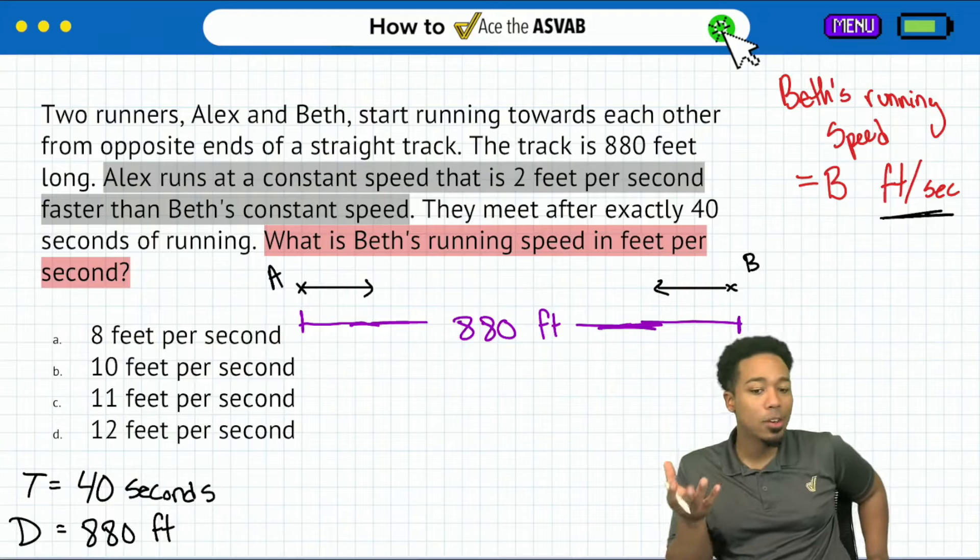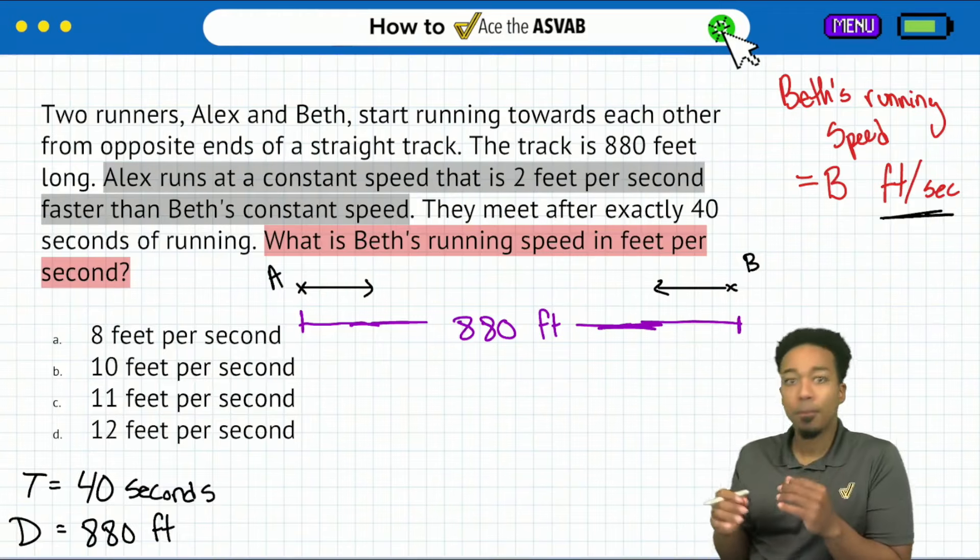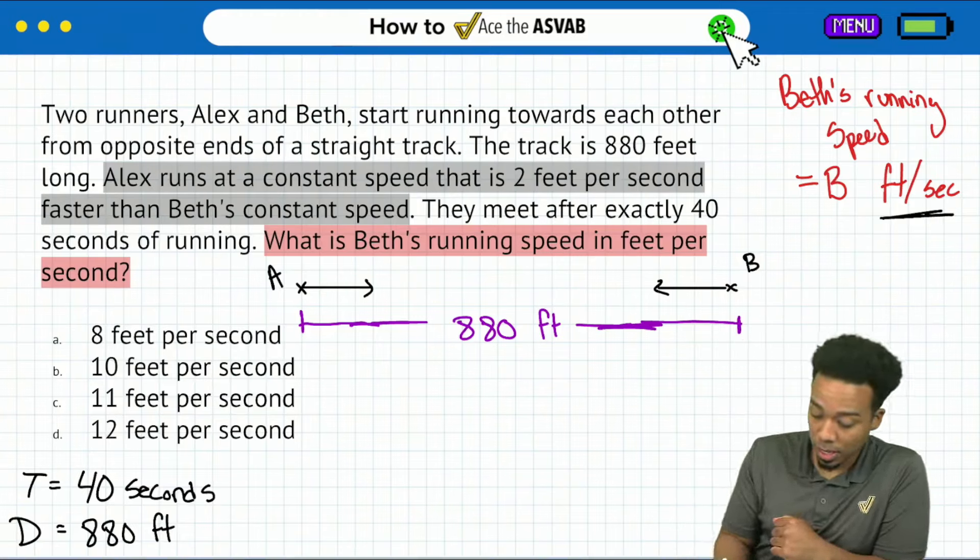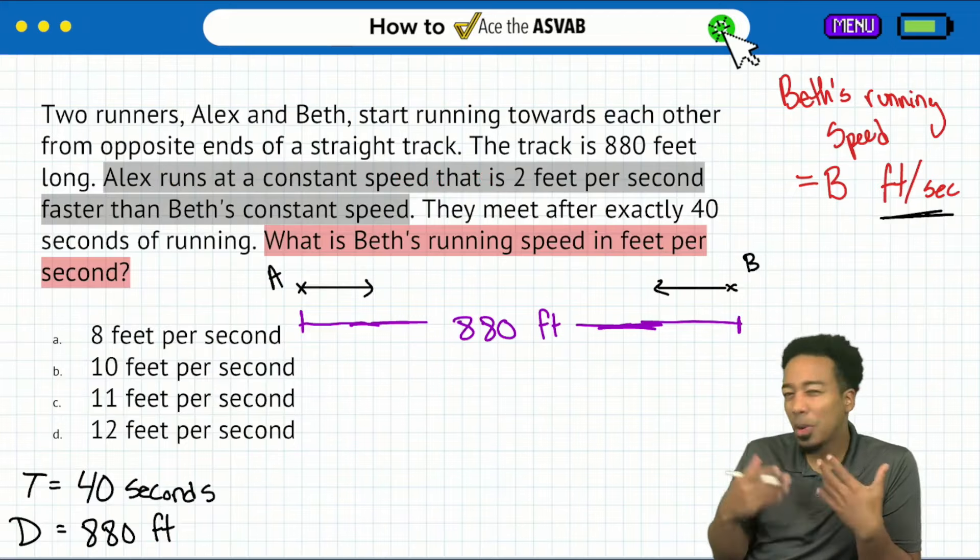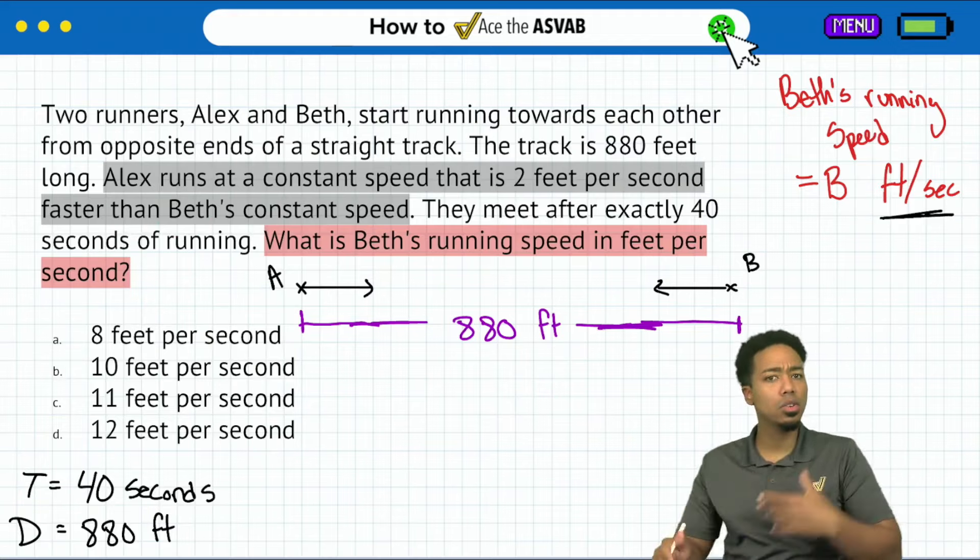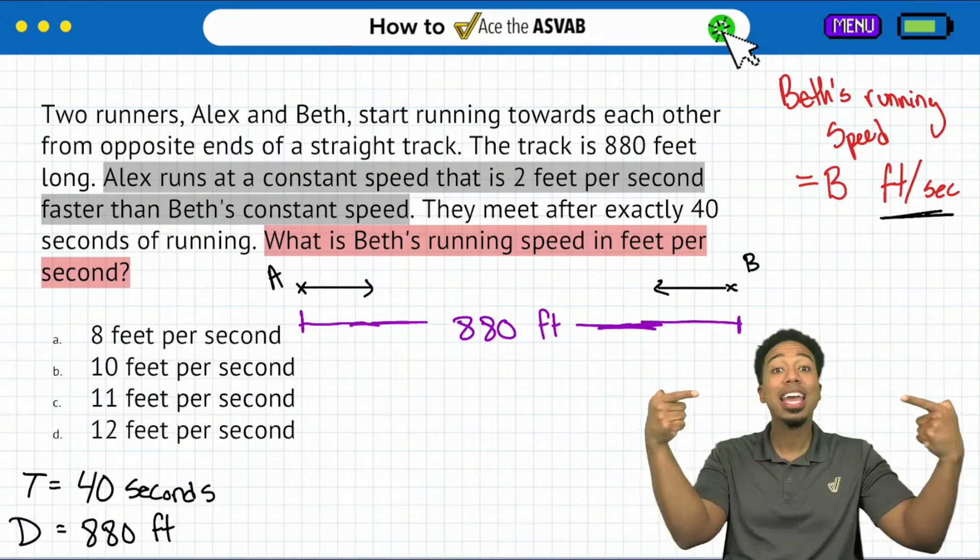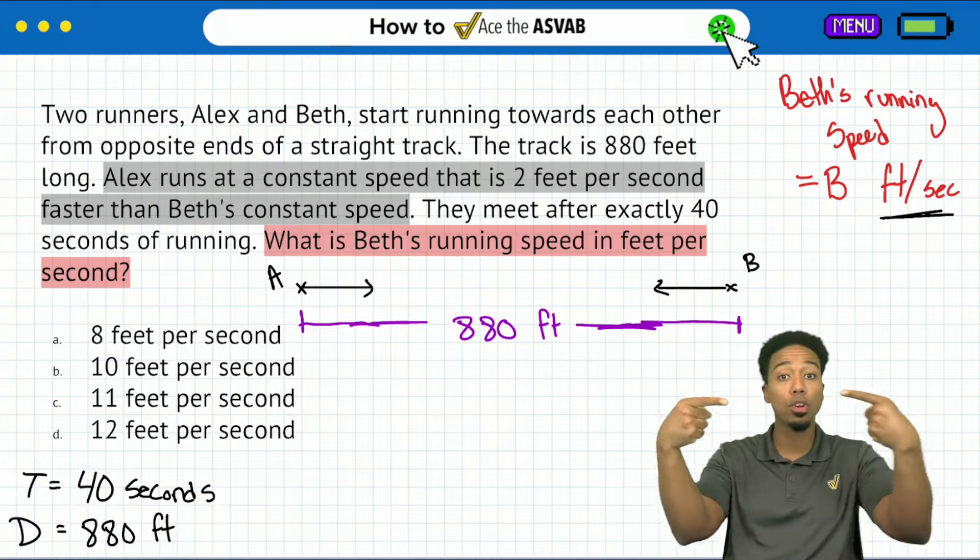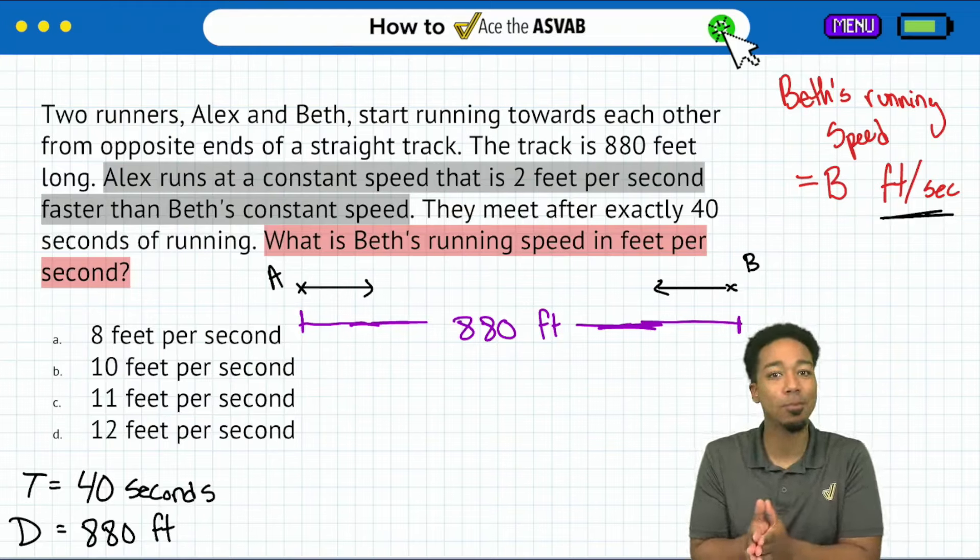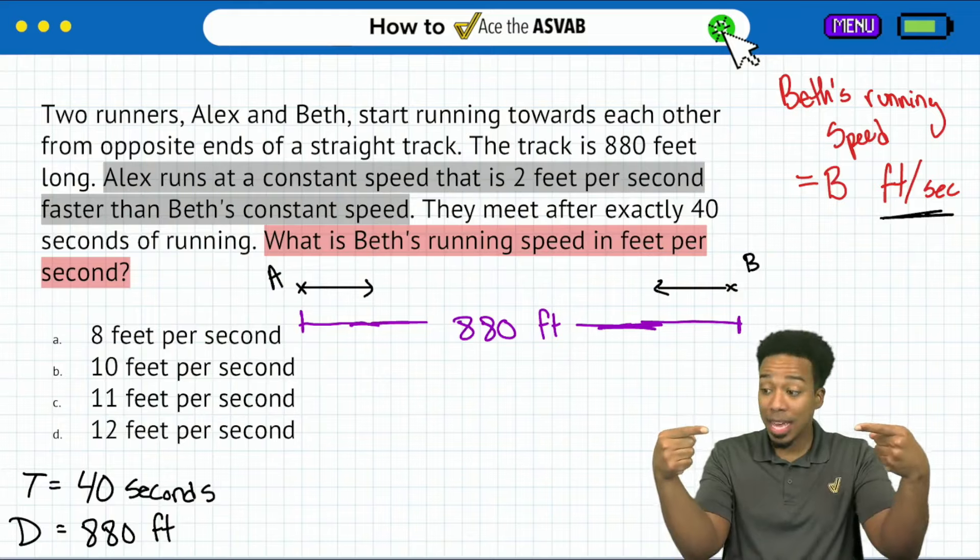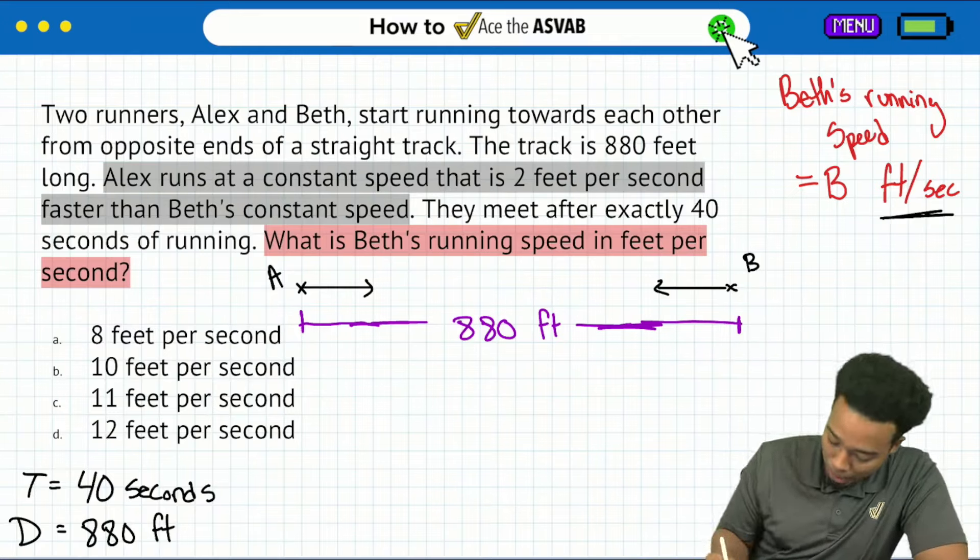It sounds like we have everything we need since the answer is in feet per second. However, we have to interpret this: Alex runs at a speed that is two feet per second faster than Beth. We have a distance-rate-time question where two subjects are moving in opposite directions, going toward each other. If you've been to my classes, you know that when working in opposite directions, we add those rates.